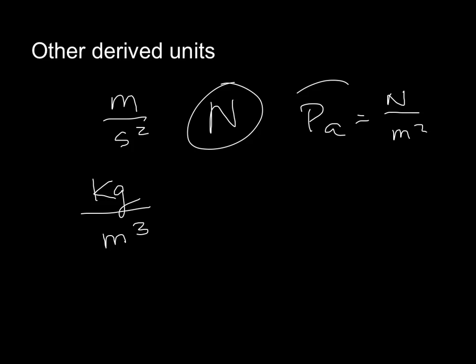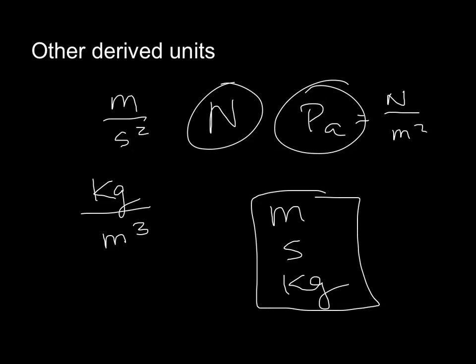So, like we said, some other derived units are acceleration meters per second squared. The Newton, even though we just write it as an N, it is a derived unit. The Pascal, which is a Newton per square meter. Even your density. Density in physics is going to be kilograms per cubic meter. So, all of these, even though it's only written with one thing, like Newtons and Pascals, those are derived units. Your only base units are the meter. Well, not the only base units, but the ones we're going to use in the first semester. The only base units we're going to use in the first semester are the meter, the second, and the kilogram. These are the base units we're going to use in the first semester. Everything else is a derived unit.